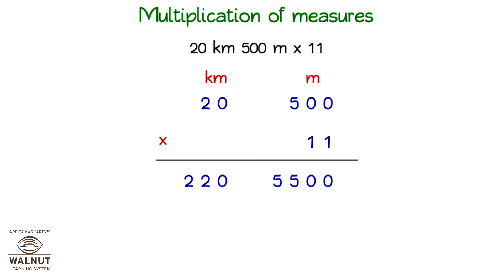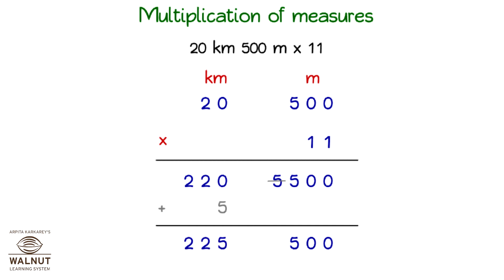Here we have 5 km which we can club with the kilometers, and keep the remaining meters. We add up the kilometers and that is our answer.